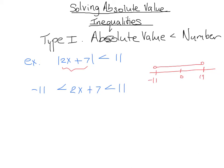So let's solve this. We can subtract 7 from everything because we're trying to get that x alone. So on the left side, we have negative 18 is less than 2x, which is less than 4. And now we can divide everything by 2 because we want to eliminate that 2. And we get that x is between negative 9 and 2. And that's our answer.